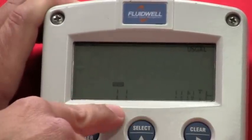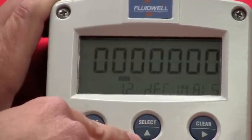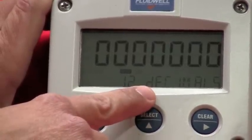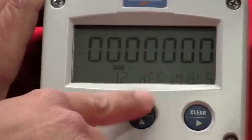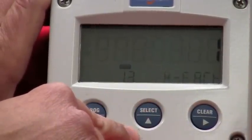Notice it comes back out of programming. To go back up to the next thing under the totalizer menu, I just hit the select key. Now we're in for decimal points of the totalizer. Right now I have no decimal points. I'm going to leave it that way. Click it again. You're at the K factor.